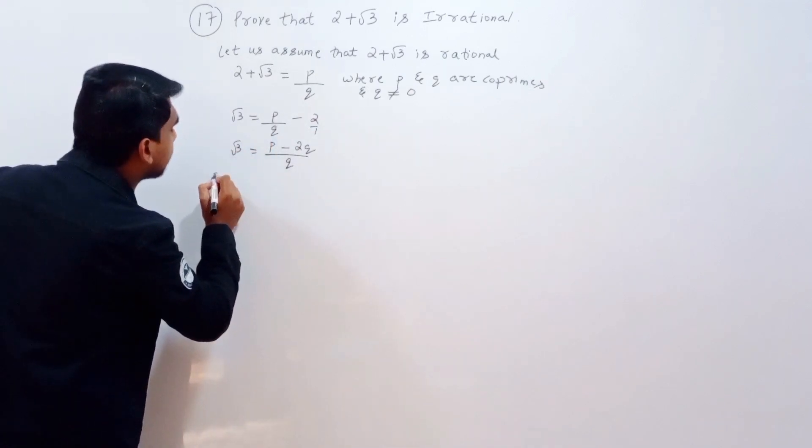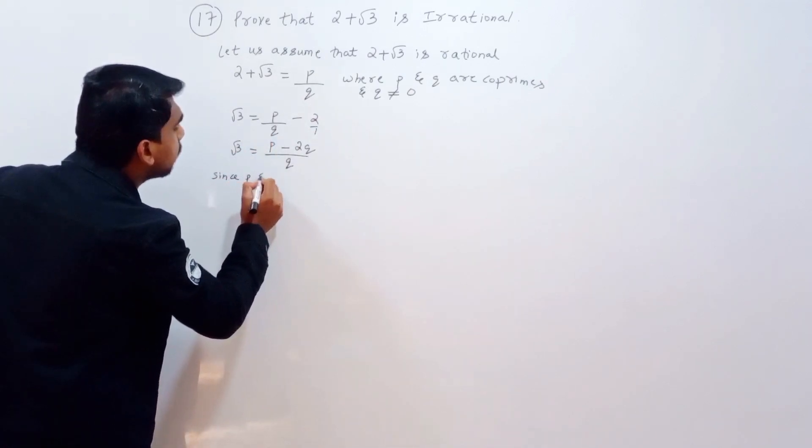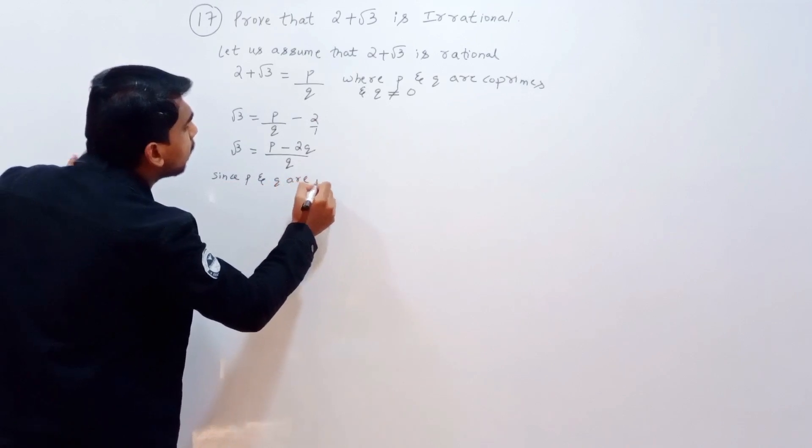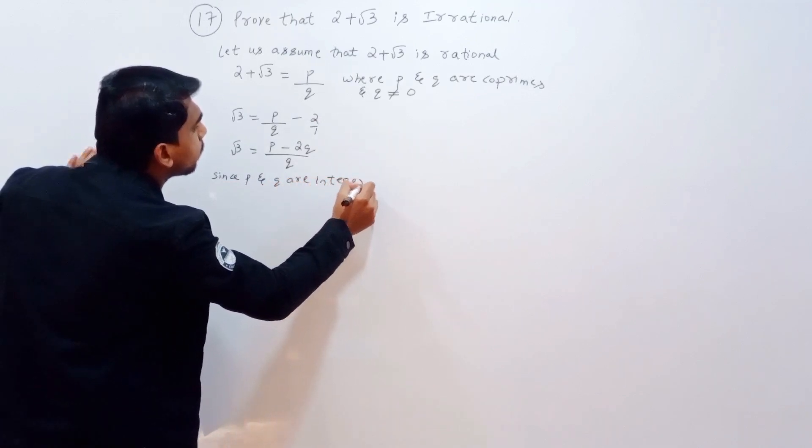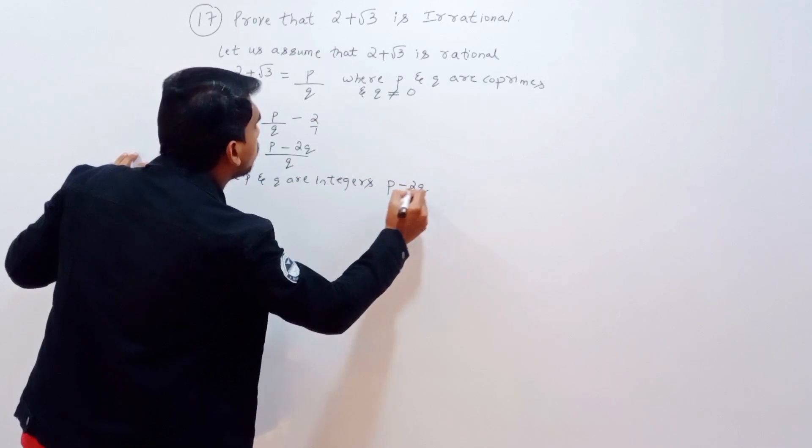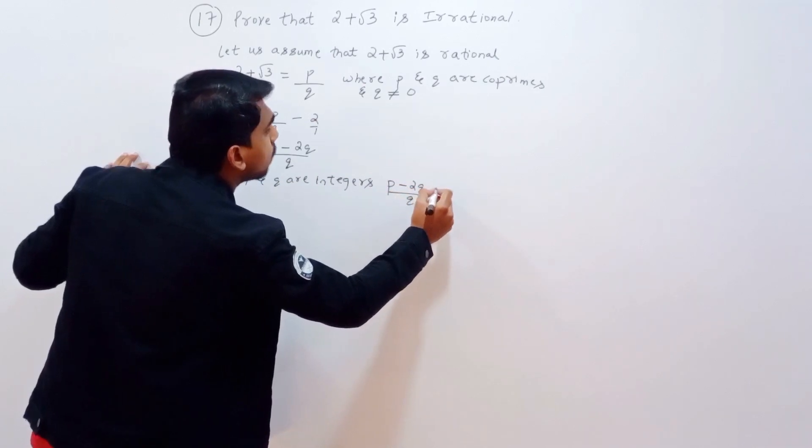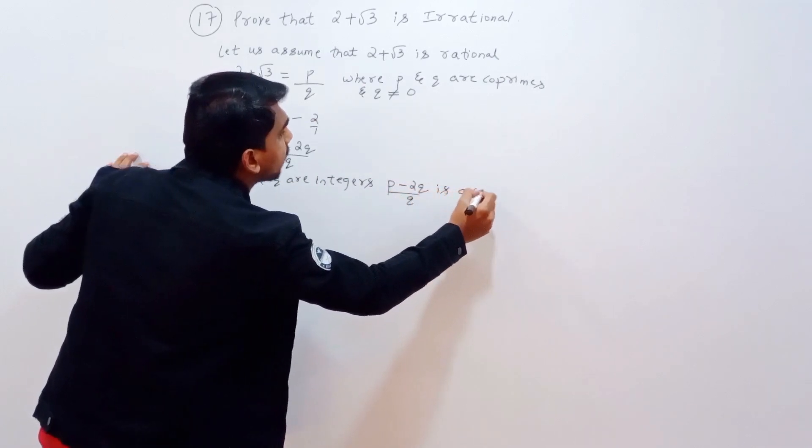Now since p and q are integers, p minus 2q by q is a rational number.